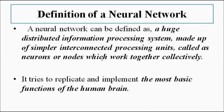The term 'distributed processing' means it is not dependent on any central controlling unit — that is what distributed means. It processes data and information, which is why it's called an information processing system. It is made up of simple neurons, nodes, or artificial neurons which process data, and a collection of those processing units makes up a neural network. It tries to implement and replicate the most basic functions of the human brain.